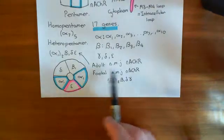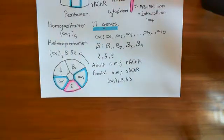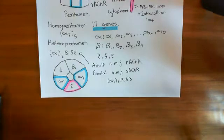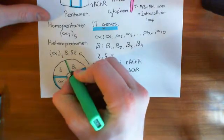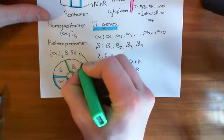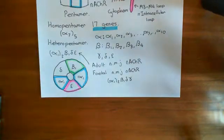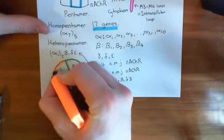When you're born and turn into an adult, the fetal receptors are gradually — not instantly — replaced by the adult NMJ nicotinic acetylcholine receptors. Let's finish colouring the picture: the beta-1 subunit is in bright green, and the delta subunit is in orange.